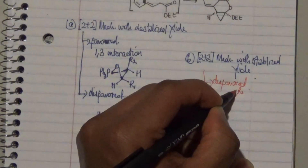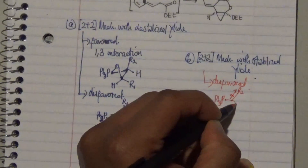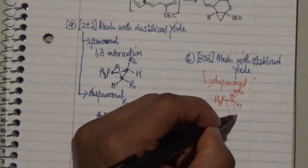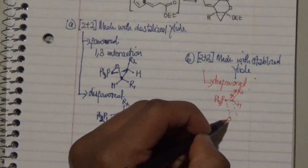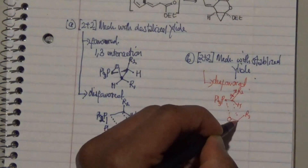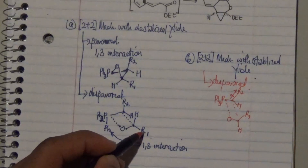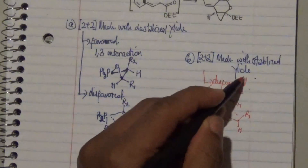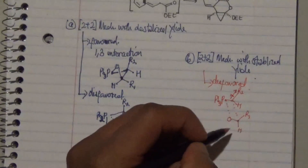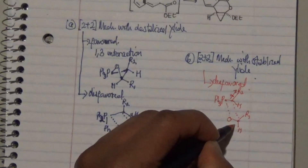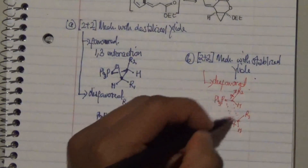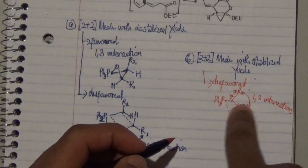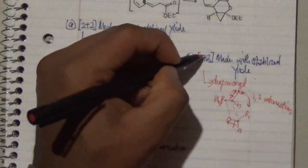In the disfavored intermediate of mechanism B, R2 generates a dipole with the hydrogen present, and there is an interaction similar to the one we saw with the oxygen, along with R1 and H. Note that R is pointing up with respect to R2, which is the further disfavored form of the destabilized ylide. As a result, we generate a 1,2-interaction which prevents the formation of this intermediate.